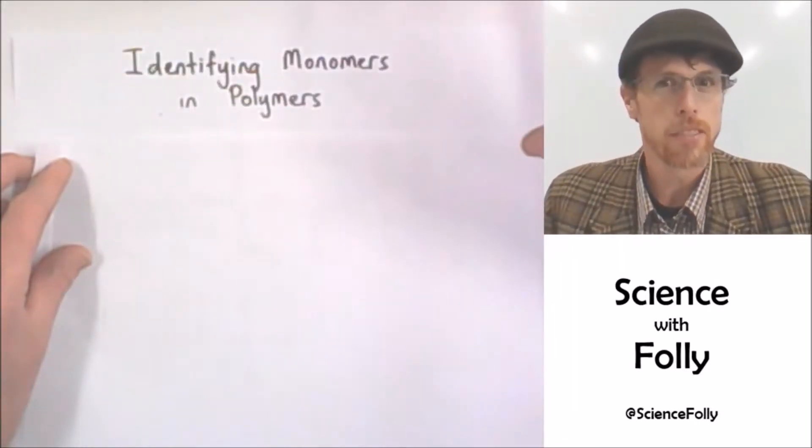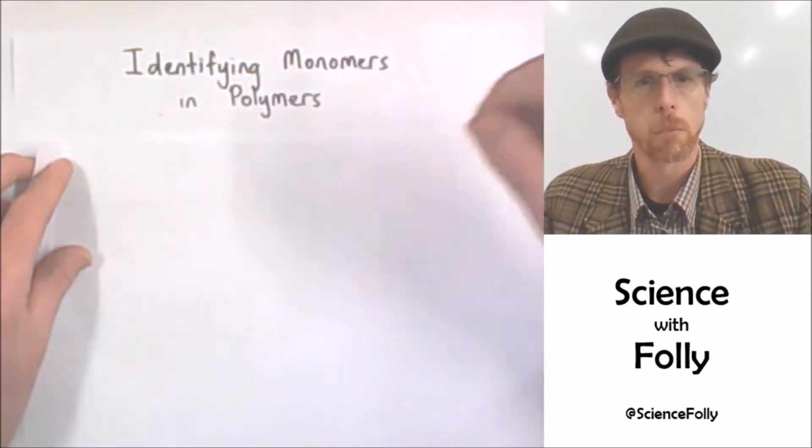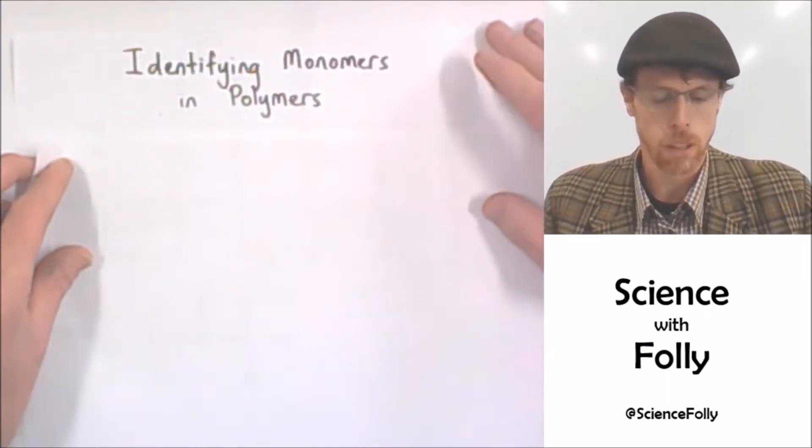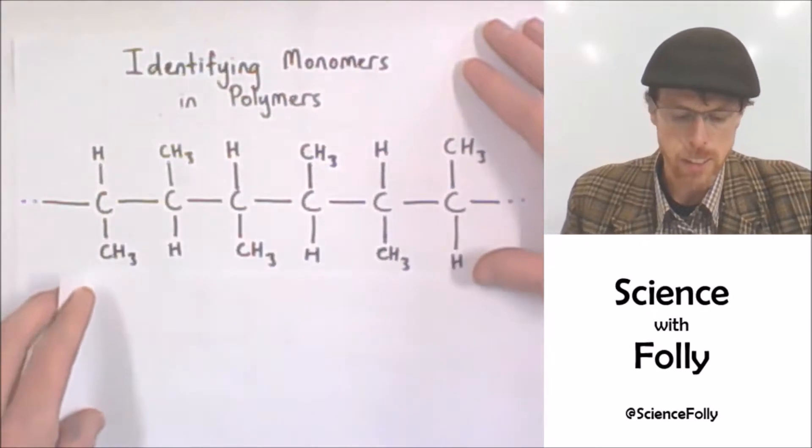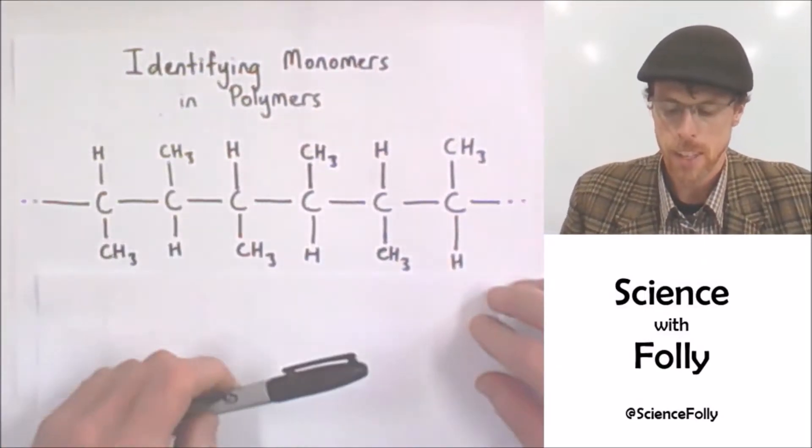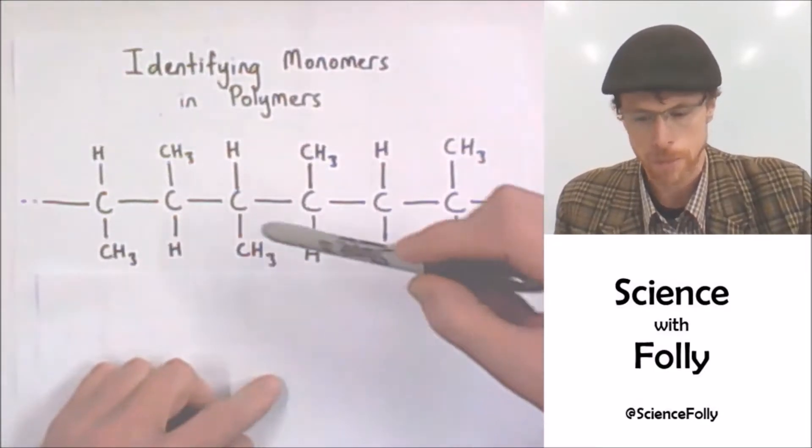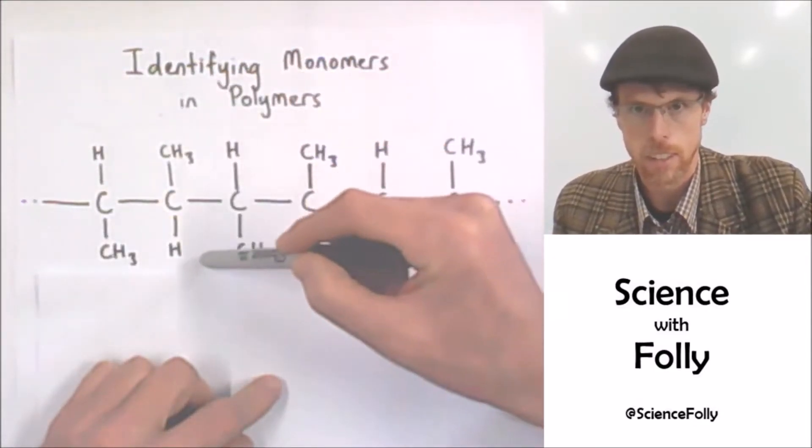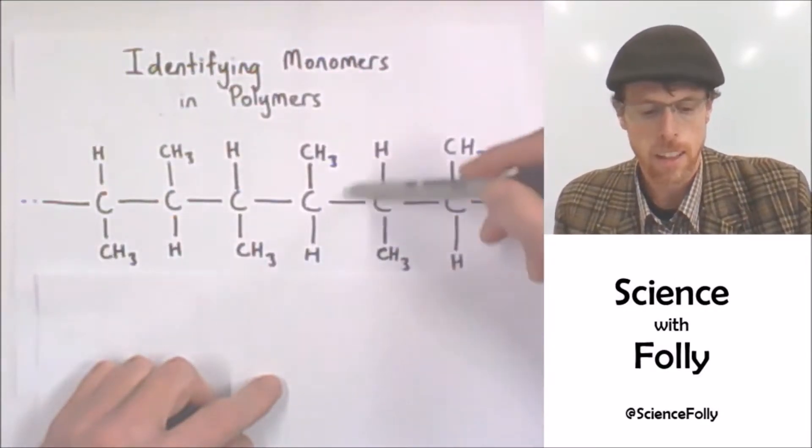Now sometimes we have to be able to identify the monomers in the large polymer molecules. So here is one here. Obviously it goes on for a long way in each direction. Can you see the repeating unit here? There's one, there's another, there's another.